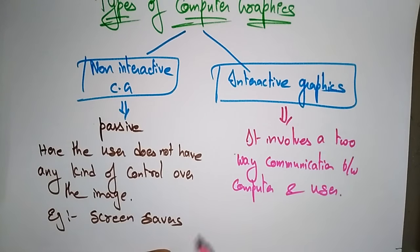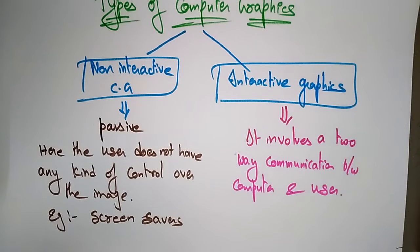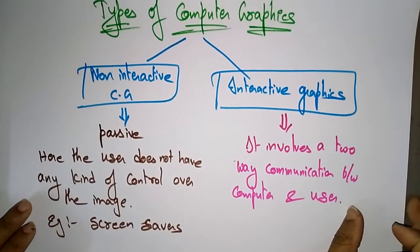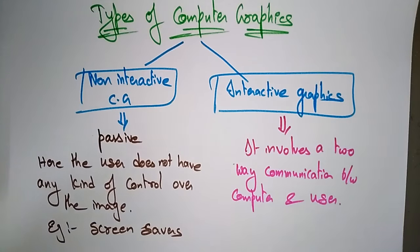In interactive graphics, the user controls the content, structure, and appearance of the objects and the displayed images. Everything is interactive because here the computer as well as the user are communicating, and with the help of that communication, objects are displayed on the screen.